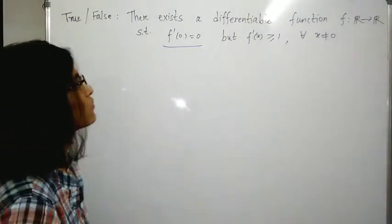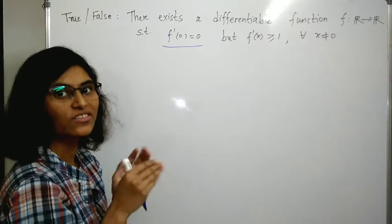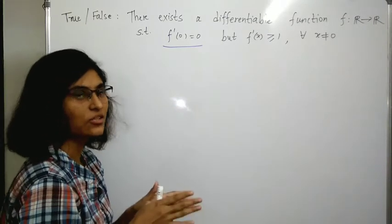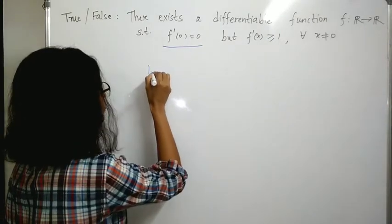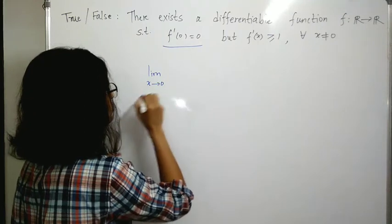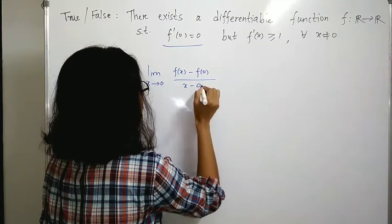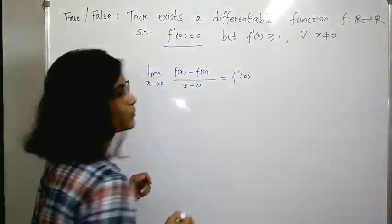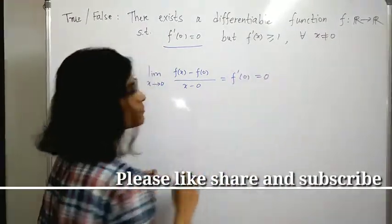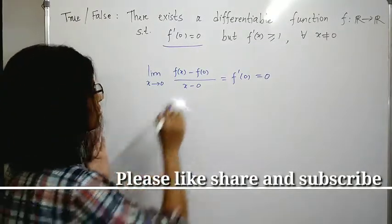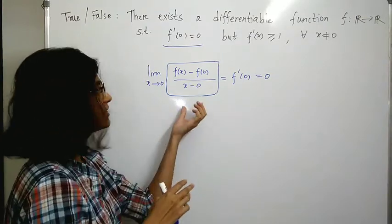Look at the first condition: f'(0) = 0. Recall the definition of differentiability at the point 0. In terms of a limit, it is the limit as x tends to 0 of [f(x) - f(0)] / [x - 0] equals f'(0). We are given that f'(0) = 0.